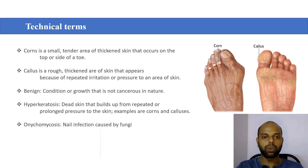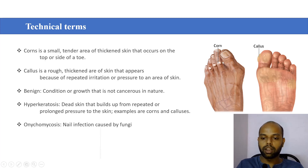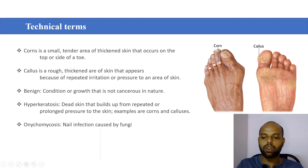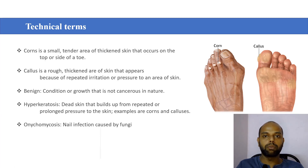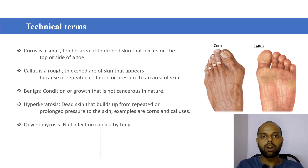Before moving to the podiatry coding we should know some technical terms. A small tender area of thickened skin that occurs on top or side of a toe is called corn. A rough thickened area of skin that appears because of repeated irritation is called callus. A condition or growth that is not cancerous in nature is called benign. Dead skin that builds up from repeated or prolonged pressure to the skin is called hyperkeratosis. The best example of hyperkeratosis is corn and calluses.